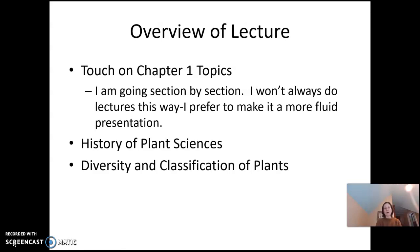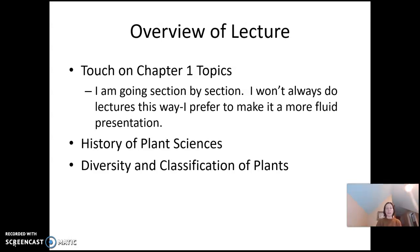I just wanted to start out this way to get you looking at the textbook and see what's there. This is going to be chapter 1, and then we are going to go into chapter 16 with diversity and classification of plants. So I'm kind of jumping 1 to 16 here. After we look at chapter 1, we'll go into the history of plant sciences and then look at diversity and classification of plants.